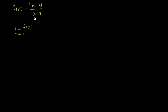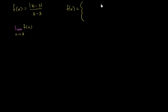So to answer this question, let's try to rewrite the same exact function definition slightly differently. So let's say f of x is going to be equal to — and I'm going to think of two cases. I'm going to think of the case when x is greater than 3 and when x is less than 3.